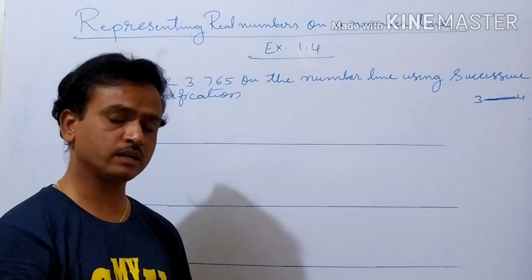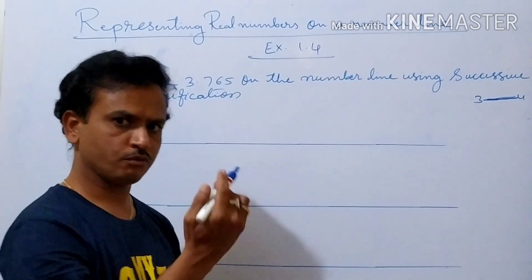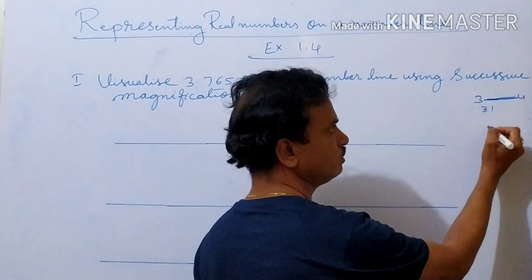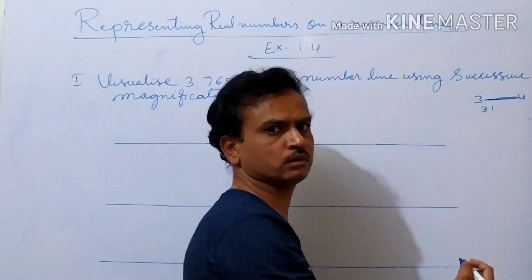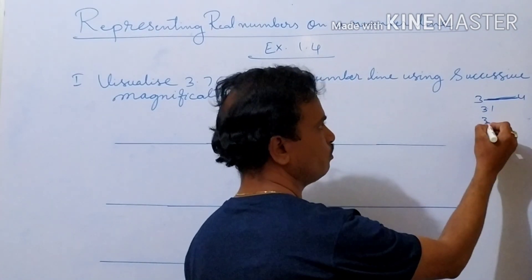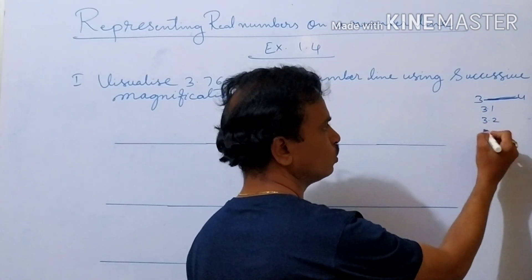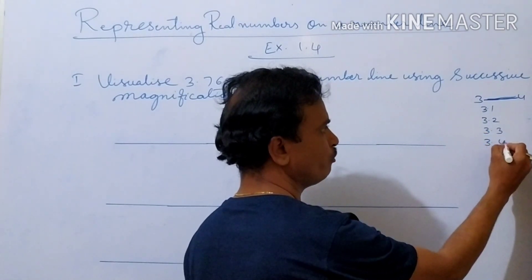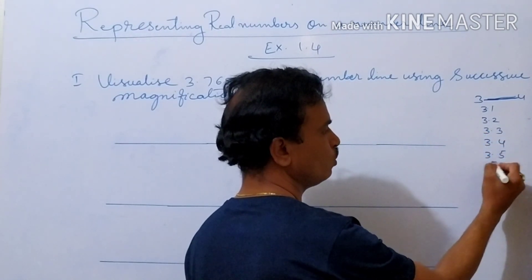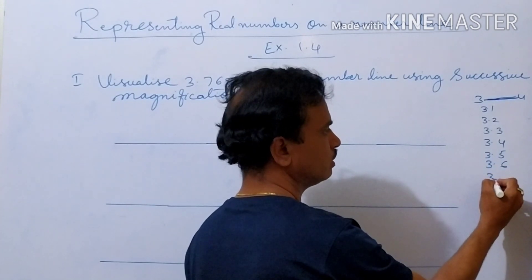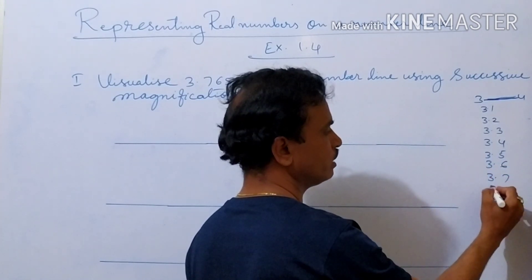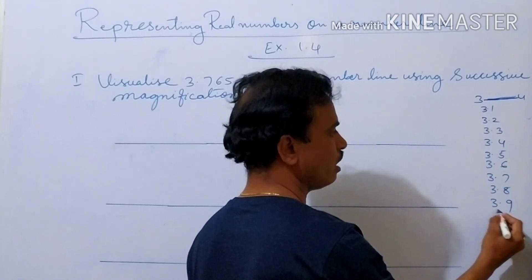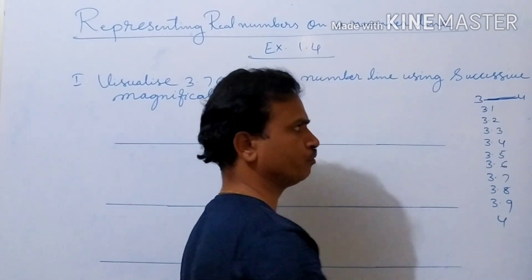How can we say there are 10 parts? So first after 3, what will we take? 3.1. Next we will take 3.2, 3.3, 3.4, 3.5, 3.6, 3.7, 3.8, 3.9. After 3.9, we will get 4.